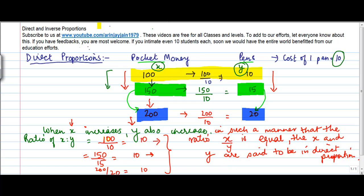So, what happens in such a case is that X upon Y is equal to, let's say, a variable K. K is a constant. The value of K always remains the same. It never changes. So, when this was 10 here, 10 here and 10 here.